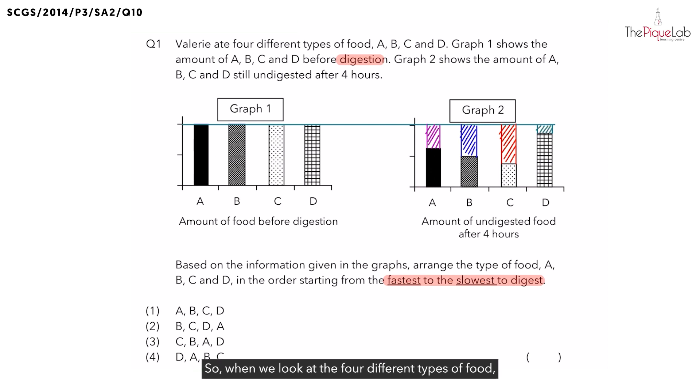When we look at the four different types of food, which one had the most amount of food digested? We can see clearly it must be the red colored one. And the red colored shaded area belongs to which type of food? It belongs to food C. So we can write down, for food C, it would have the most amount of food digested.